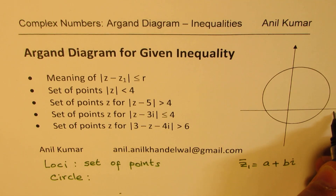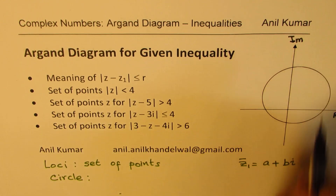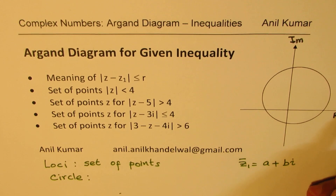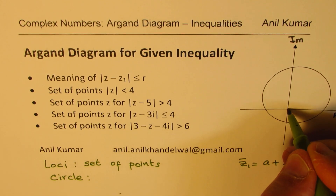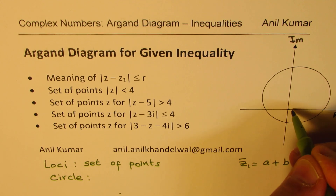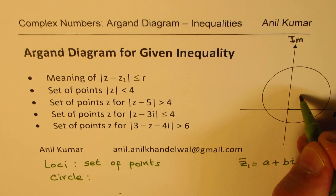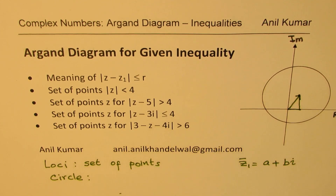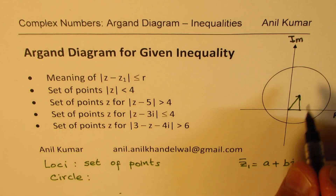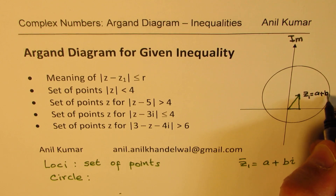The horizontal axis will be treated for real numbers, and the vertical as imaginary. Sometimes we write iy there and x on this side. So when I say z1 is a plus bi, then from the center, the value a means go right along the real axis, and then go up. So we get this point, and that becomes the complex number z1 equals a plus bi.